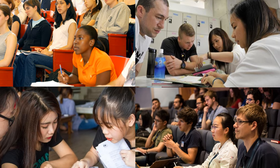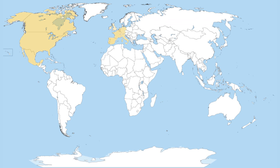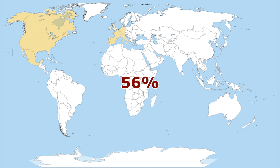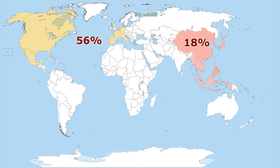International student mobility flows are evolving rapidly. North America and Western Europe have traditionally had the largest share of inbound students, with 56% of the global market. East and Southeast Asia is the next most important region for inbound students, with 18% of the global market. Central and Eastern Europe also rank fairly high for inbound students, with 12% of the market.